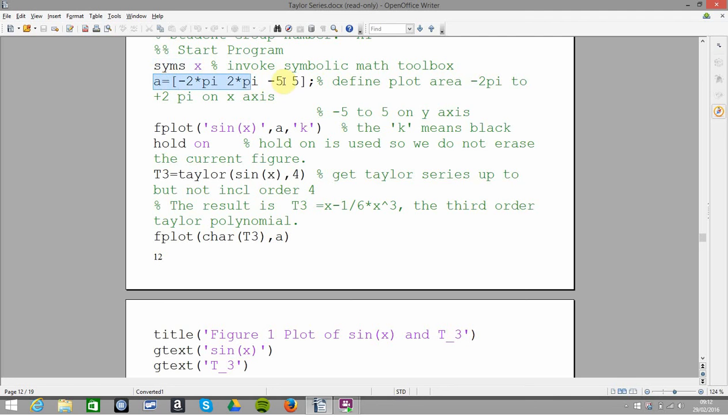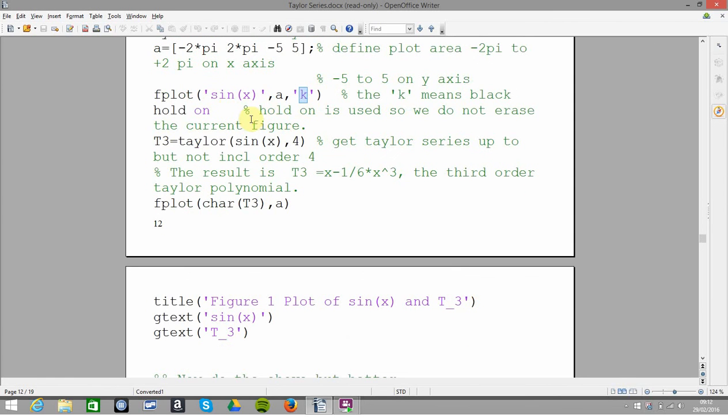A for axis. So my axis, my left is minus 2 pi, my left and the right is plus 2 pi. My y, the lower bound minus 5, the upper bound plus 5. And fplot, so I'm plotting sin of x. A is the axis that I've used, and k for black.